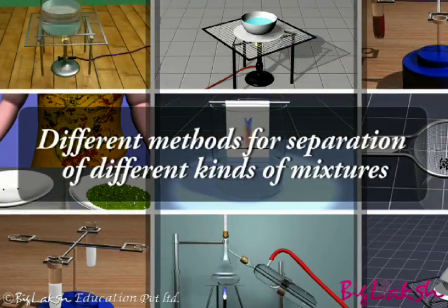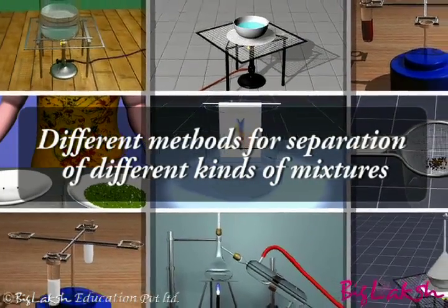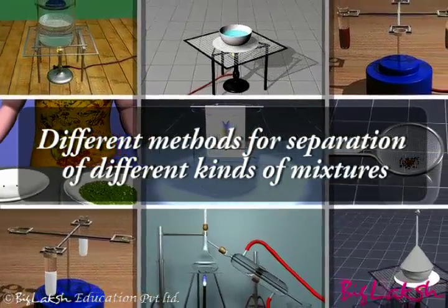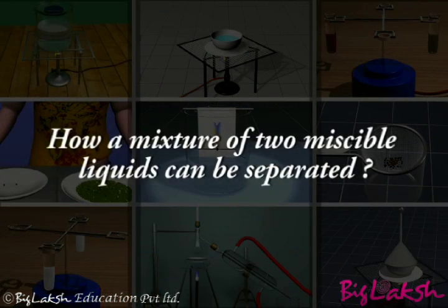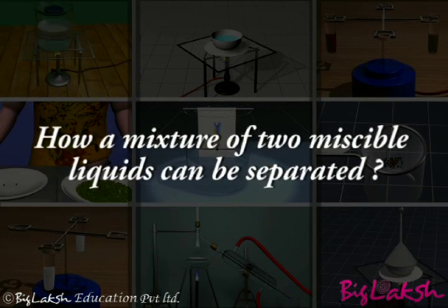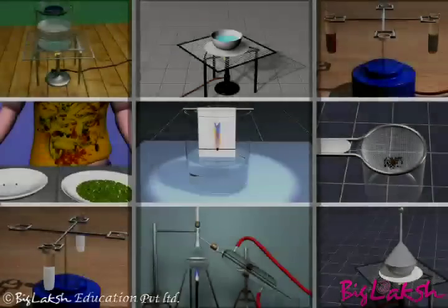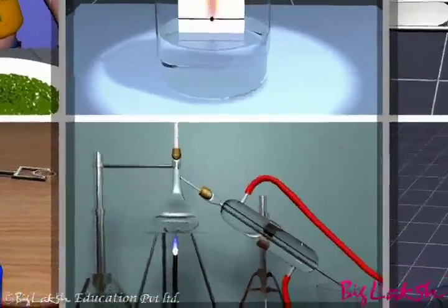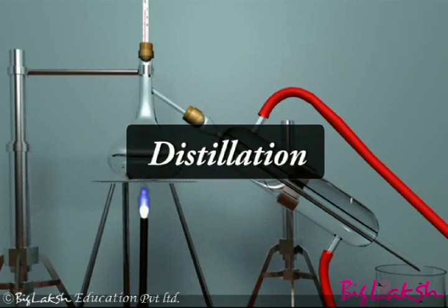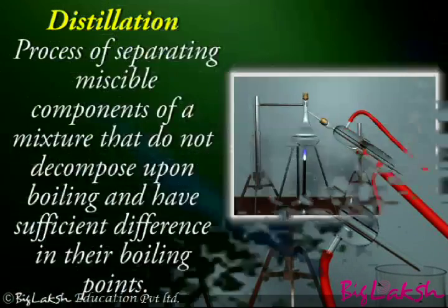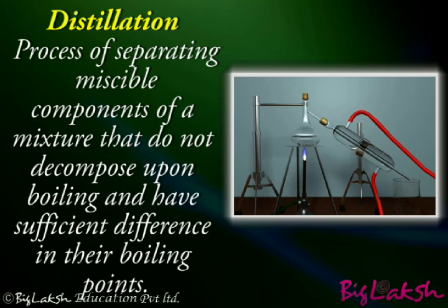We know that different methods are used for separation of different kinds of mixtures, but do you know how a mixture of two miscible liquids can be separated? Such a mixture can be separated by a method called distillation. Distillation is the process of separating miscible components of a mixture that do not decompose upon boiling and have sufficient difference in their boiling points.